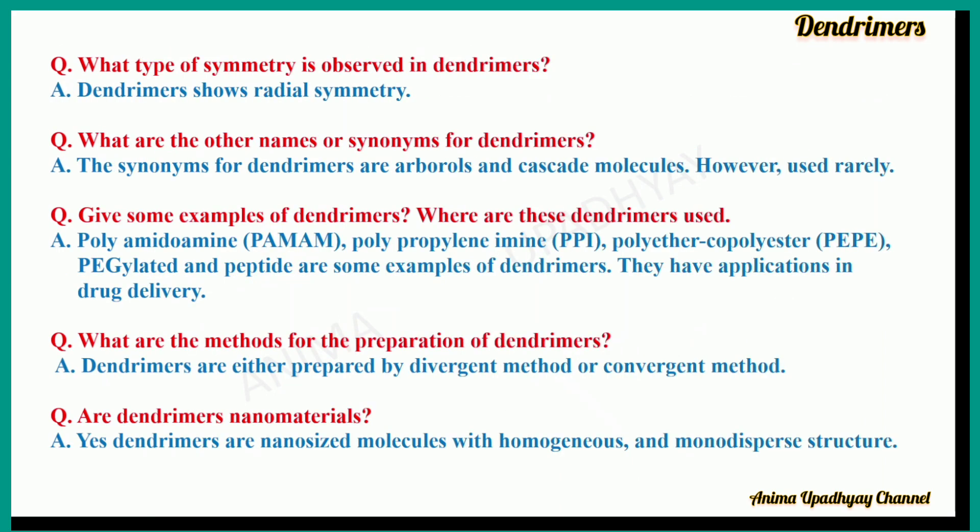What type of symmetry is observed in dendrimers? Dendrimers show radial symmetry. What are the other names or synonyms for dendrimers? The synonyms for dendrimers are arborols and cascade molecules. However, the commonly used name is dendrimer, as arborols and cascade molecules are rarely used.